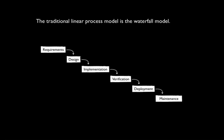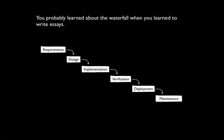This approach should be familiar to you. Probably when you learned how to write an essay back in 7th or 8th grade, you learned a similar process. You would start with your brainstorm, get all your ideas together, put them into an outline. From the outline, you would then write your paper, proofread it, and submit it to the instructor. My guess is you really didn't go into a maintenance phase. But the idea of this flow makes sense, and you've seen it before.